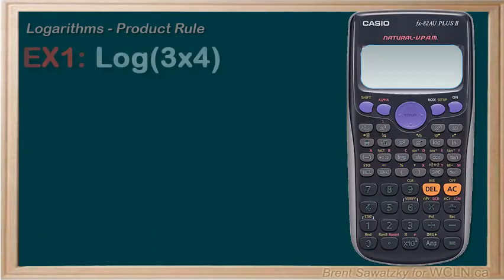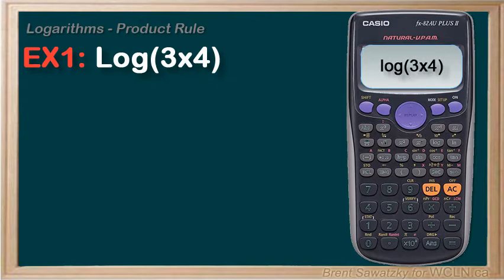Let's check out this new rule. Example one: log of three times four. Now we could enter it directly into our calculator as log of three times four, or log of 12, and we'd get 1.079 rounded.